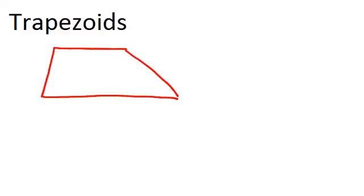In this video, we will learn all about trapezoids. A trapezoid is a quadrilateral, which means it has four sides, and it has one pair of parallel sides.